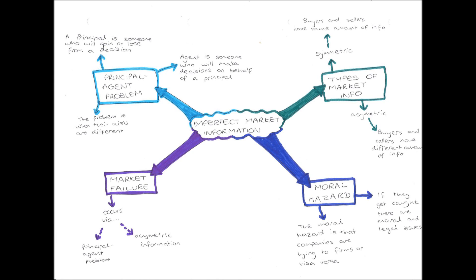So how does market failure occur by imperfect market information? Well, if asymmetric market information occurs and therefore the moral hazard occurs, there will be market failure because welfare has not been maximized. And also if the principal-agent problem occurs, then market failure will occur.